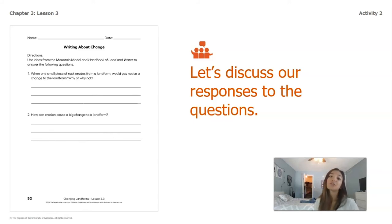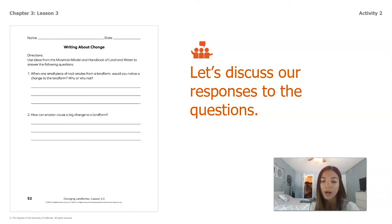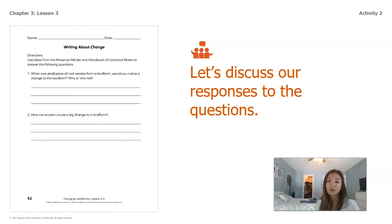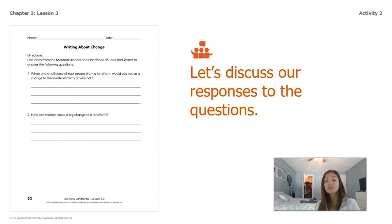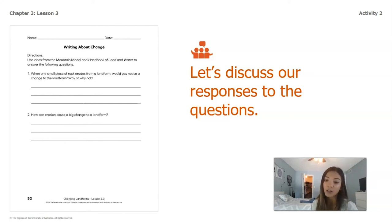We're going to discuss some of the responses now. Question one: when one small piece of rock erodes from a landform, would you notice a change? If I think back to the mountain model where we used the cotton balls, we did not notice when we took just one or two cotton balls off the plate. That leads me to think that one small piece of rock coming off a mountain is not going to be a noticeable change — it's something really small, and it also takes a lot of time for that to happen.